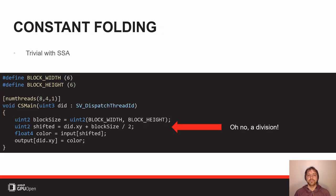Let's look at constant folding first. In this example, look at that division — divisions are expensive operations and you want to avoid them where possible. In this case, both operands of the division are constant. You could argue that by writing 'block size divided by 2,' the intent of the program at a high level is more visible. Luckily, because of constant folding, there's no trade-off between runtime performance and high-level expression of intent — the compiler can clean it up for you.